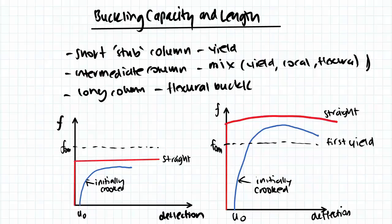So for our short columns, remember that the ones that are short and stubbed, so they are compact, will most likely yield before anything else. For our intermediate columns on the other hand, it becomes a bit more complex. We have a mixture of yielding and potentially local buckling and flexural buckling. And for our long columns, we know that they do not reach the strengths of those columns that are much shorter, and they always flexurally buckle before they actually yield.